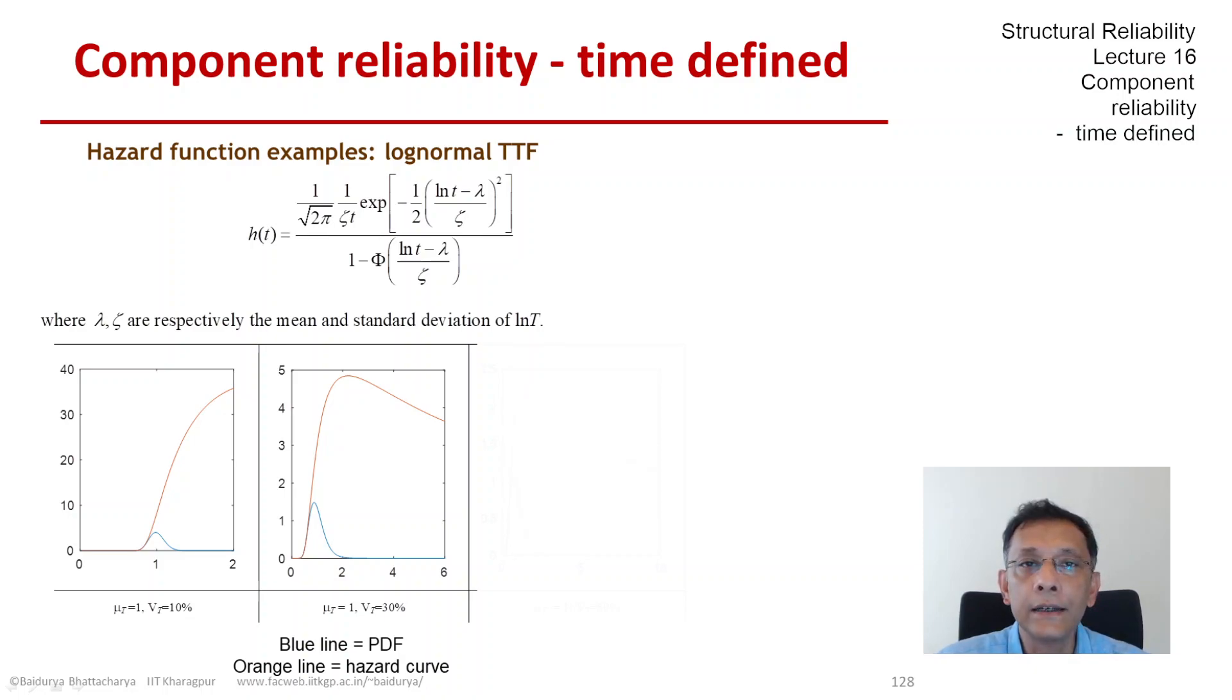before selecting a lognormal TTF unless you know for a fact that the item in question in the beginning or for a large part of its life exhibits an increasing failure rate type behavior and then suddenly it starts to have a decreasing failure rate. So as long as that property is satisfied by the item in question, you can adopt a lognormal TTF with a large 30% COV.